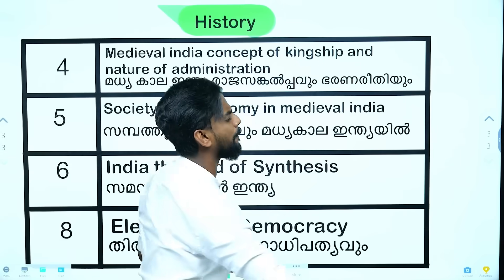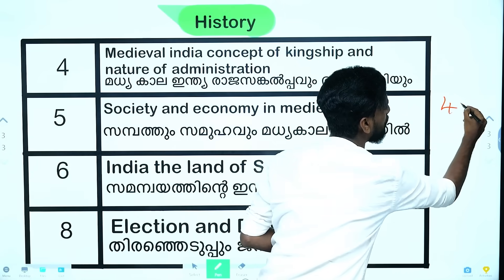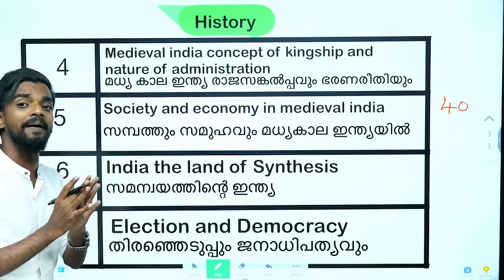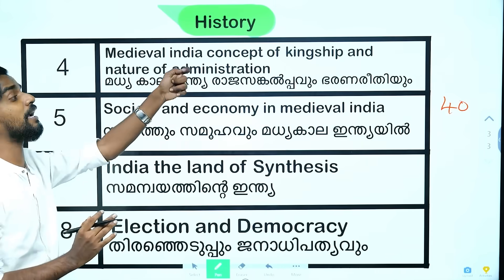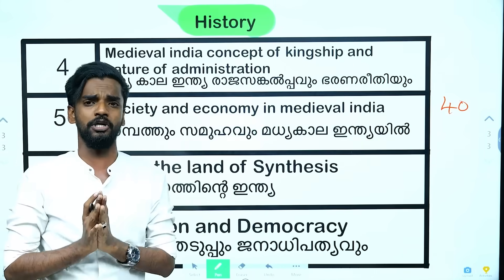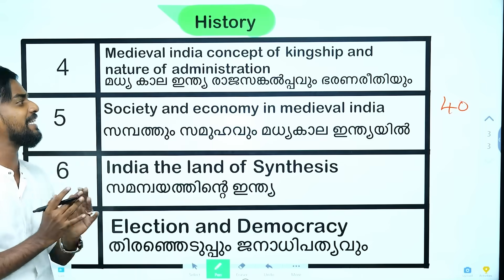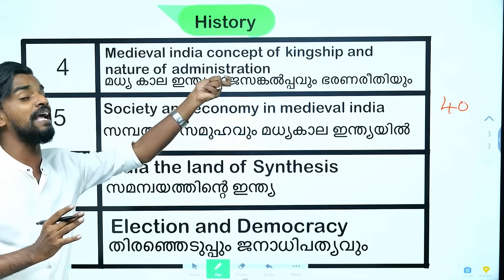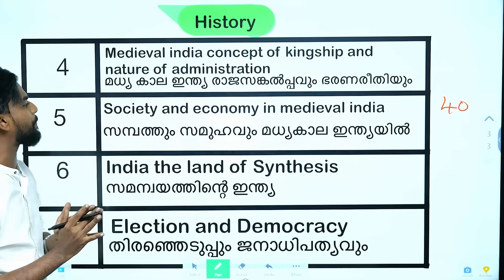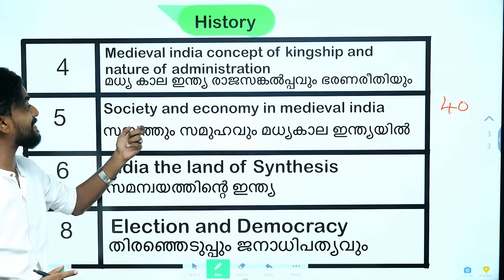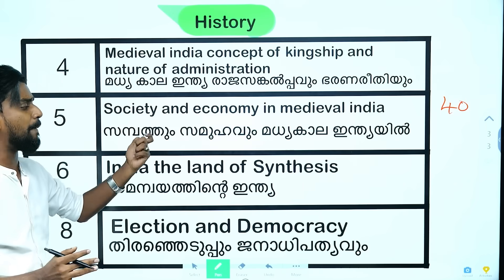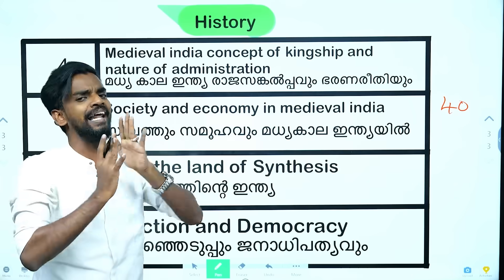We read about 40 chapters — we read about medieval India: concept of kingship and nature of administration. That is, the Indian Raj Sangalpa. We read about society and economy in medieval India. It is primary, active, and difficult to teach people.